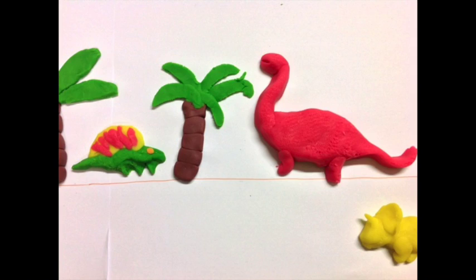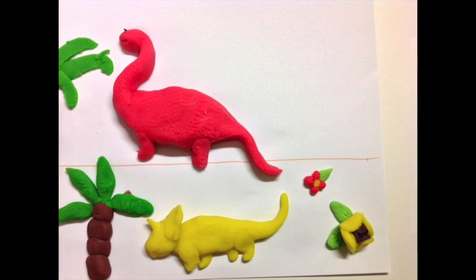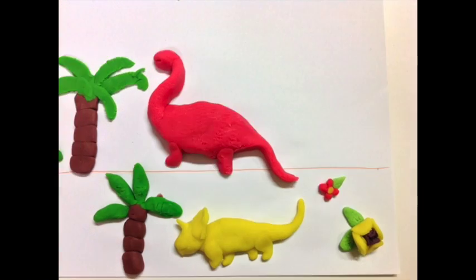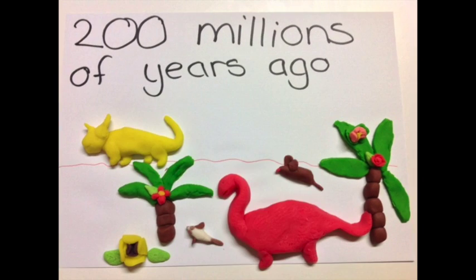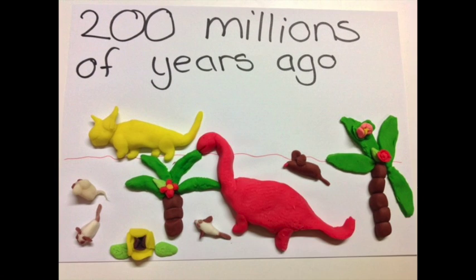250 million years ago, great reptiles, the dinosaurs, roamed the planet. 200 million years ago, the first mammals appeared and shared the land with them.